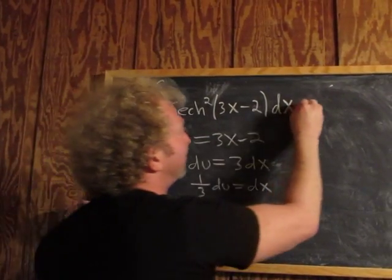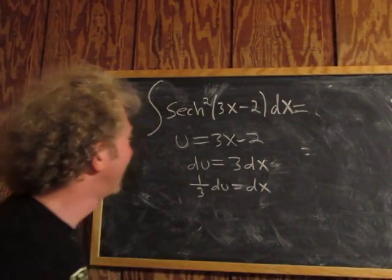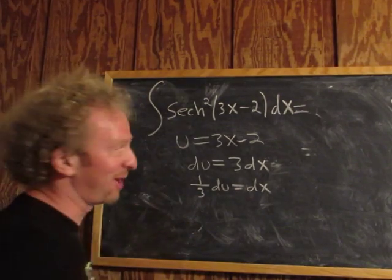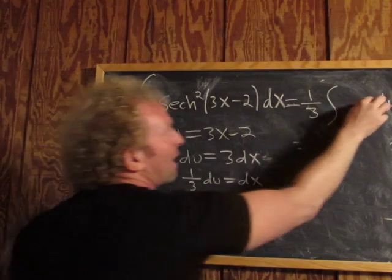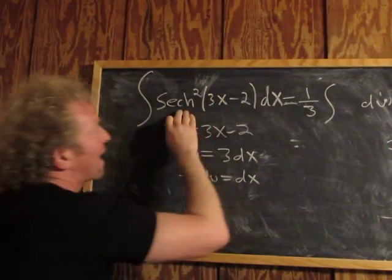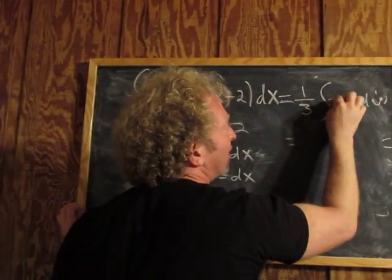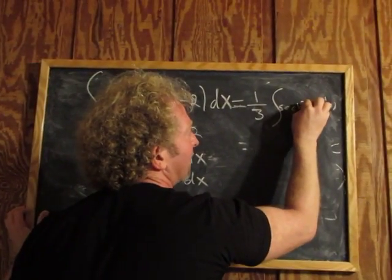So this equals... dx is one-third du, so we'll pull the one-third up. We have the hyperbolic secant squared of u.